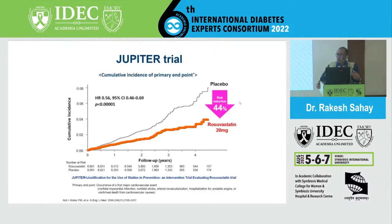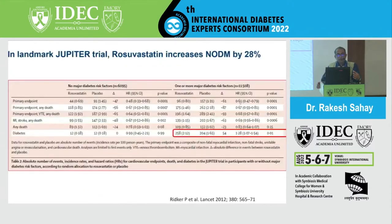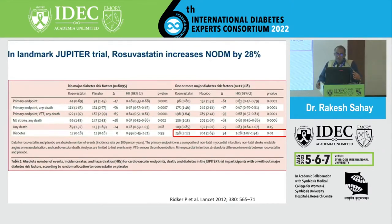The JUPITER trial is a primary prevention trial with rosuvastatin. Using 20 mg of rosuvastatin versus placebo in patients without diabetes, there was a 44% reduction in the primary composite endpoint of cardiovascular disease. However, new-onset diabetes was increased by 28%, bringing into focus the occurrence of new-onset diabetes with statin use. After looking at all the data, the conclusion is that the benefit of statins probably far outweighs the risk of new-onset diabetes.